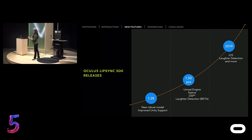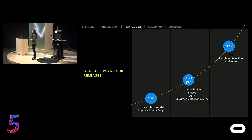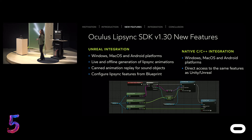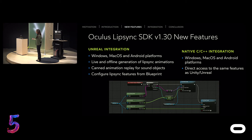In 2019, we are going to offer iOS support, laughter detection becomes a full feature, and more. For Unreal integration, we support it on Windows, Mac OS, and Android platforms. You can do live and offline generation of lip sync animations, and even do canned animation replay for sound objects. You can configure your lip sync features from Blueprint. Native C/C++ is also offered on the same platforms — Windows, Mac OS, and Android — and supports the same features as Unreal and Unity.